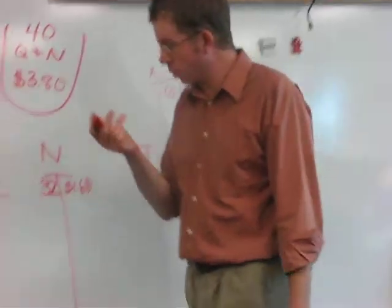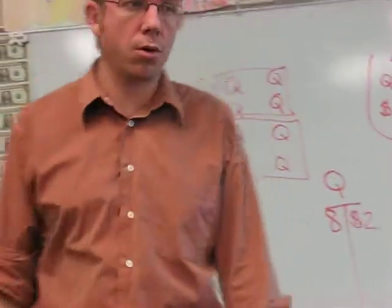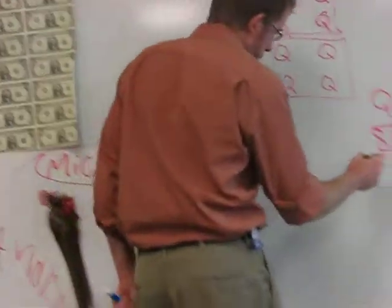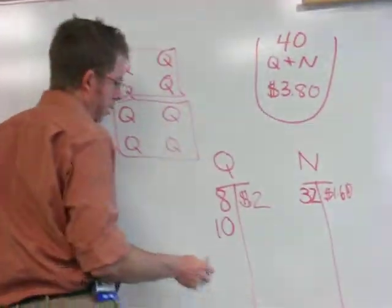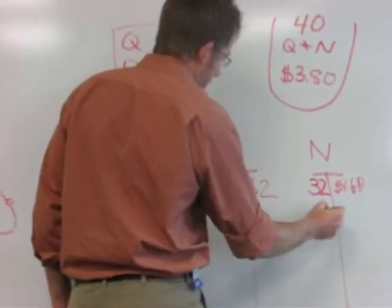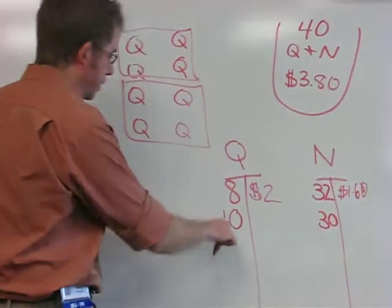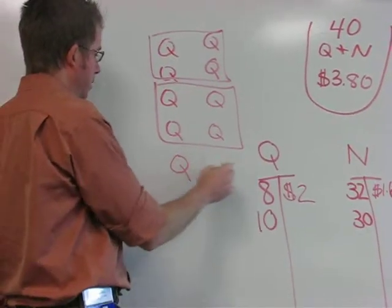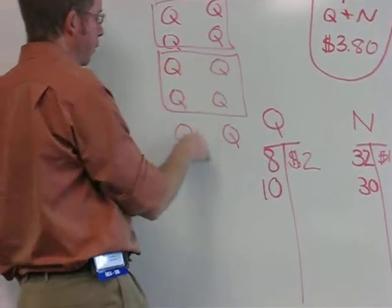Now let's say I do 10 quarters. 10 quarters. That means I'm going to need 40 minus 10 is 30 nickels. Do my math. 10 quarters, well here was 8. If I add two more, that's going to be 250.